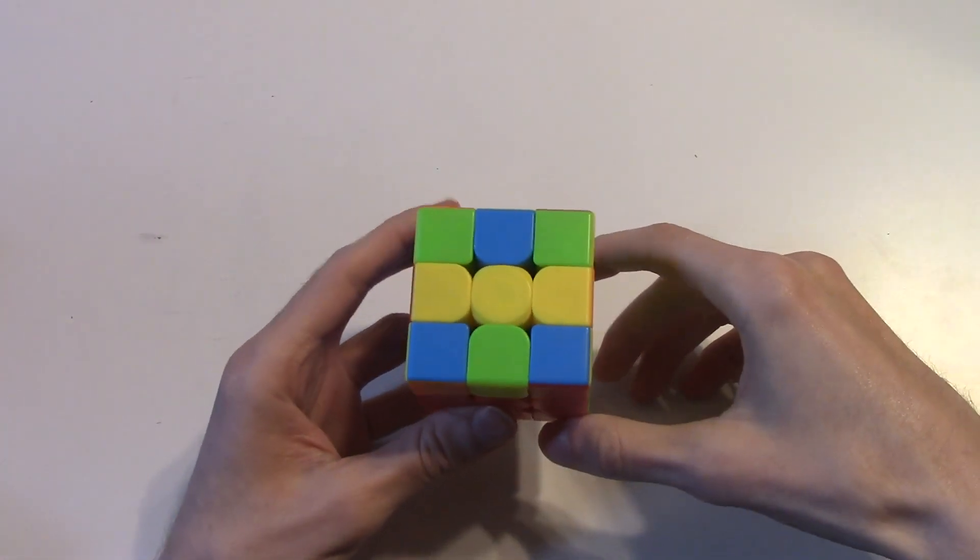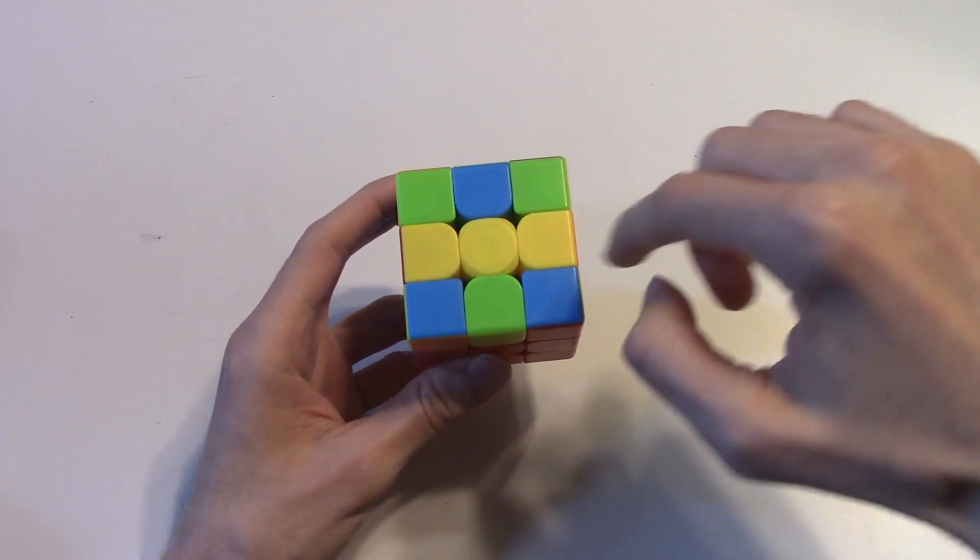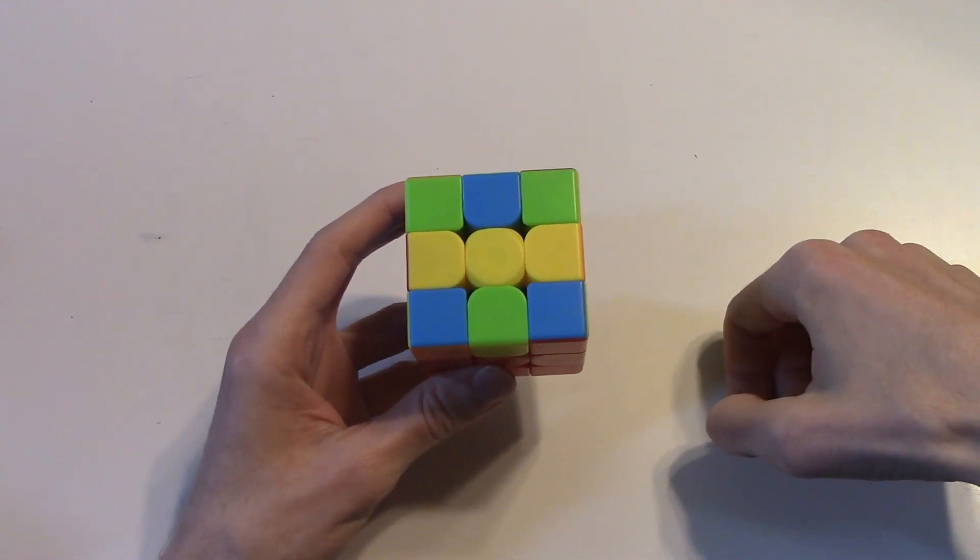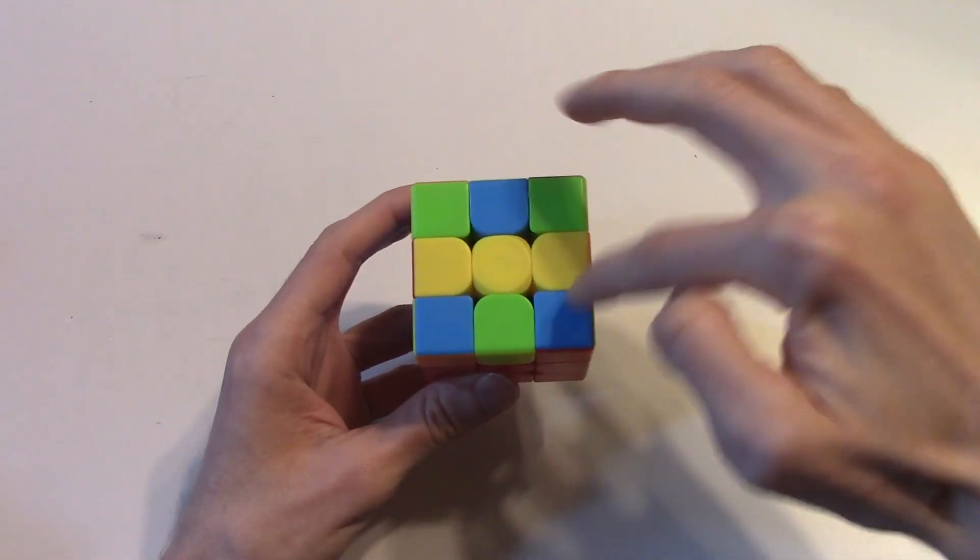And then for the corner permutation, these two corners are the same, and these two corners are the same. For this specific case, the edge between the two corners is going to be opposite the color of the corners. So we've got green, blue, green here, and blue, green, blue over here.